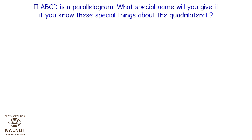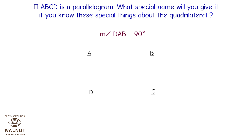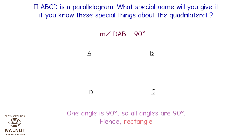Quadrilateral ABCD is a parallelogram. What special name will you give it if measure of angle DAB is equal to 90 degrees? Since one angle is 90 degrees, all angles are 90 degrees. Hence, it is a rectangle.